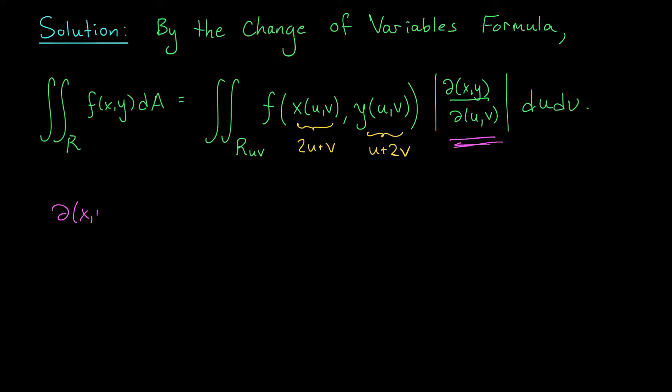The Jacobian ∂(x,y)/∂(u,v) is defined as the determinant of the matrix [∂x/∂u, ∂y/∂u; ∂x/∂v, ∂y/∂v]. Using my descriptions of x and y in terms of u and v I can write down these derivatives. I should get the determinant of [2, 1; 1, 2].